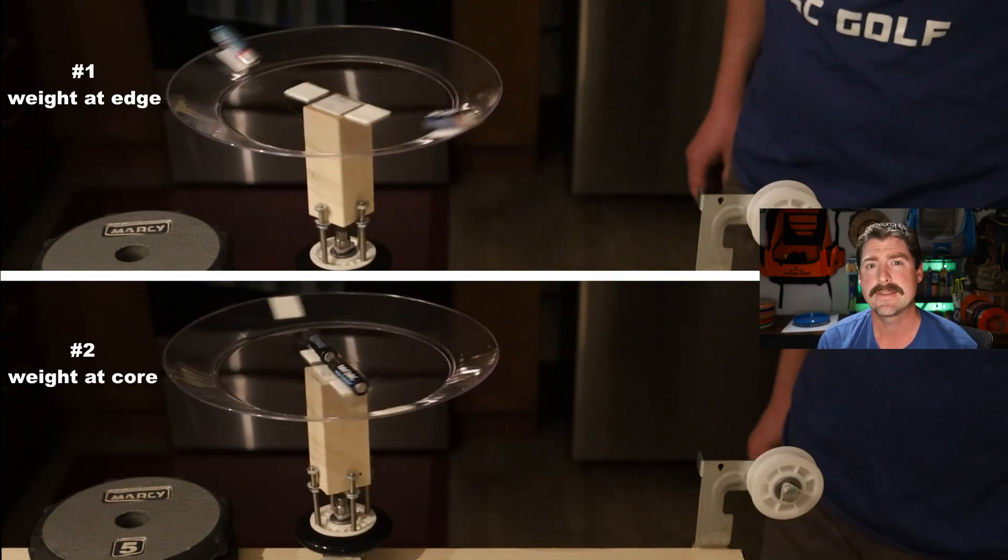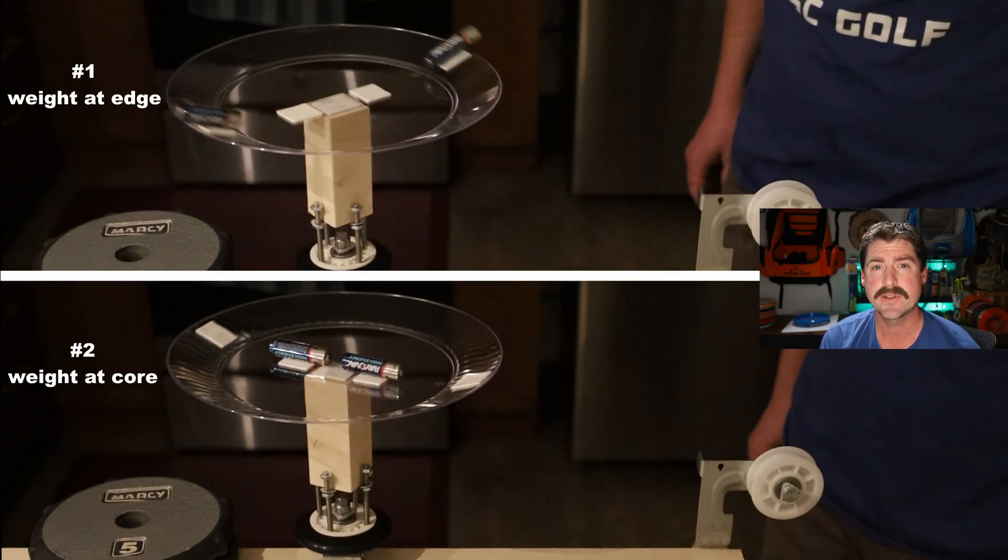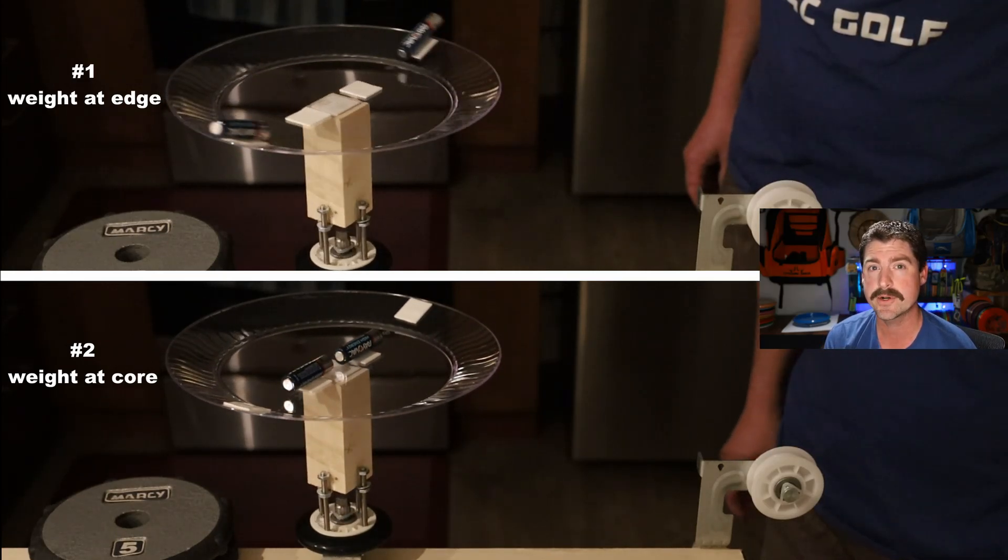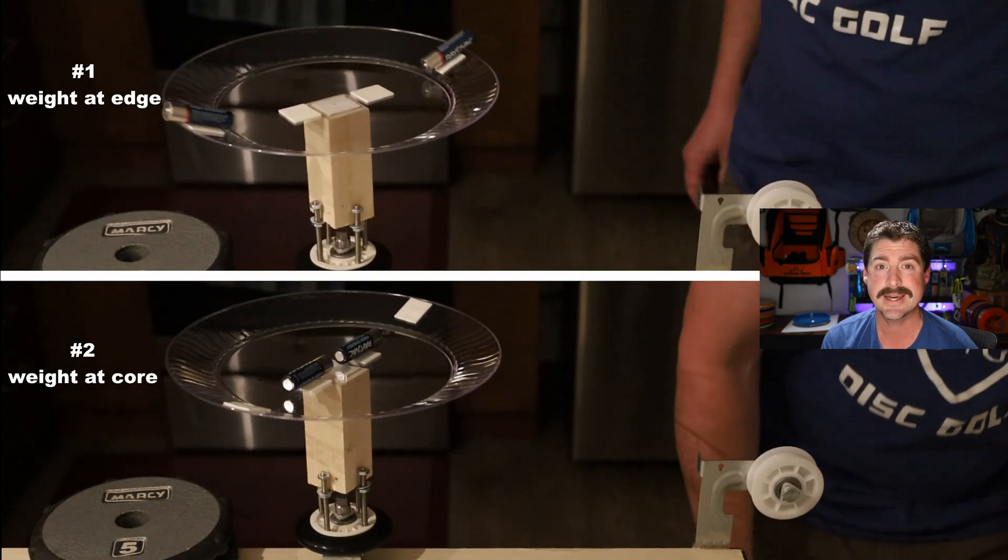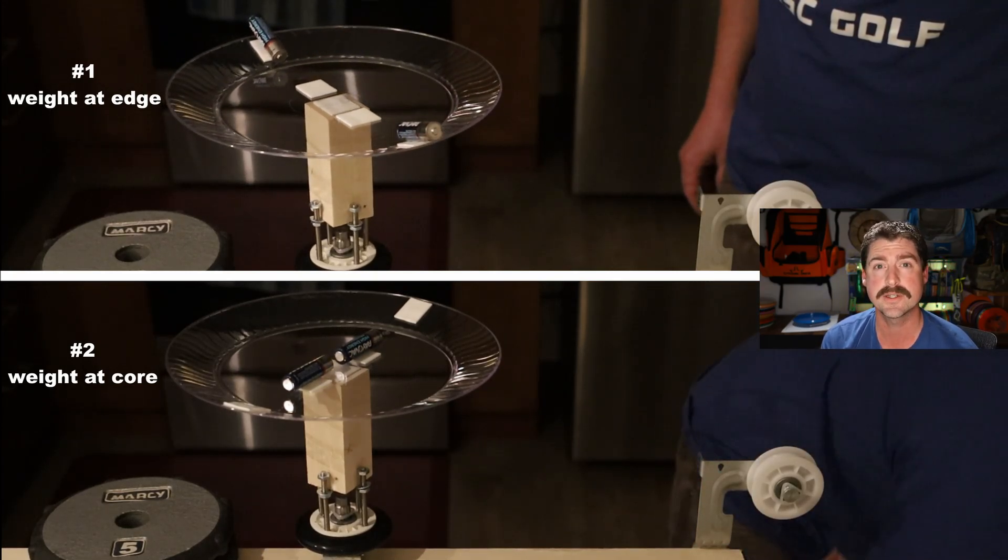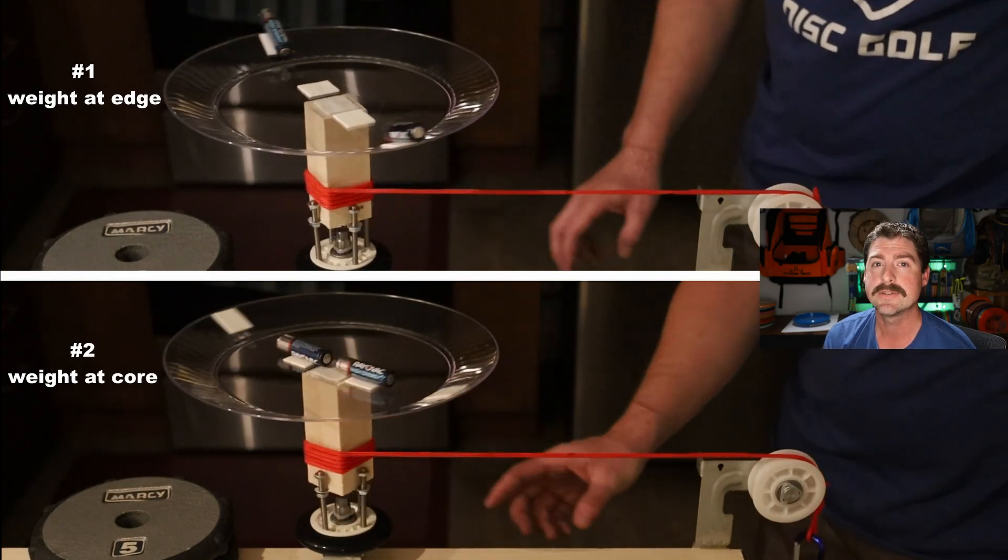And I think that, in this case, having all that extra weight on the rim means that however much spin you can impart on a disc is going to be cut down if you're throwing an overmold disc, a disc with more weight on the rim.